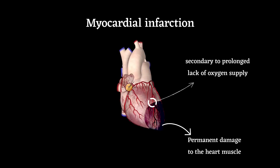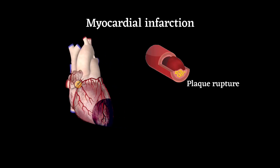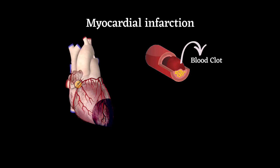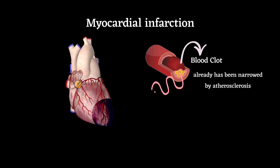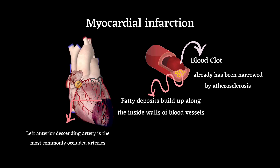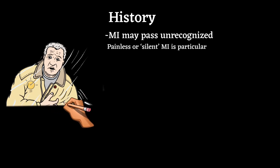A heart attack, or myocardial infarction, is permanent damage to the heart muscle secondary to prolonged lack of oxygen supply — ischemia — which is most often caused by plaque rupture with thrombus formation in an epicardial coronary artery. The blood clot typically forms inside a coronary artery already narrowed by atherosclerosis, a condition in which fatty deposits (plaque) build up along the inside wall of blood vessels. The left anterior descending artery is the most commonly occluded coronary artery.